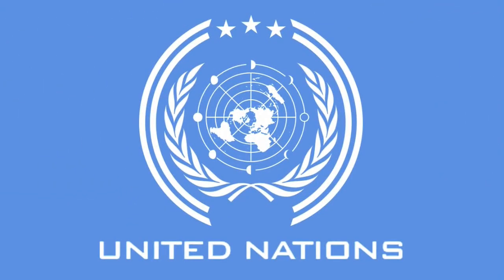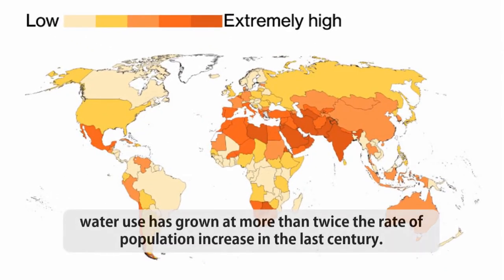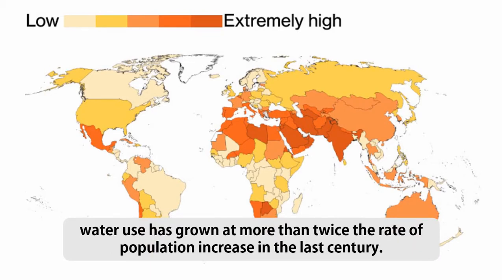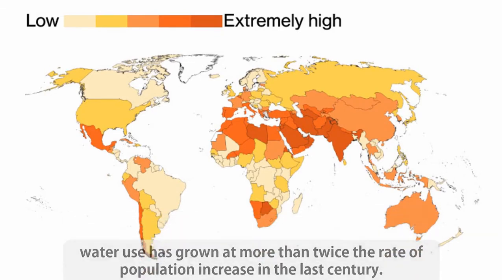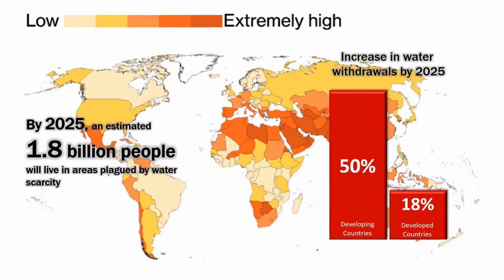According to the United Nations, water use has grown at more than twice the rate of population increase in the last century. By 2025, an estimated 1.8 billion people will live in areas plagued by water scarcity, with two-thirds of the world's population living in water-stressed regions as a result of use, groundwater depletion, and climate change.